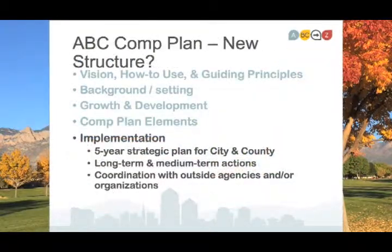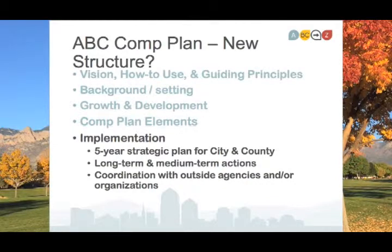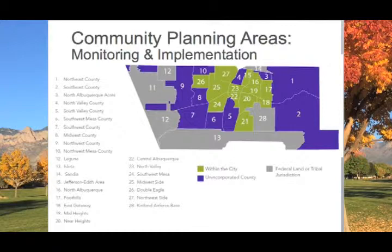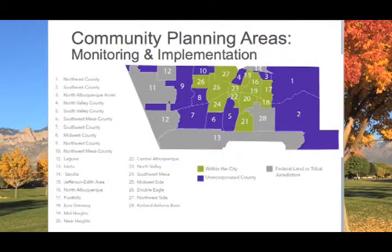An updated implementation section will include strong guidance for both the city and the county in terms of what we should be doing on a short-term and longer-term basis to achieve the community vision. The neighborhood chapter of the comprehensive plan will include a new organization of our community planning areas. Ongoing monitoring and implementation in these areas should allow us to track progress toward our goals over time.